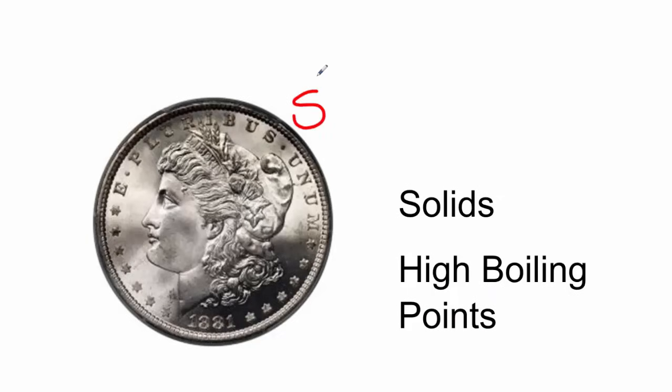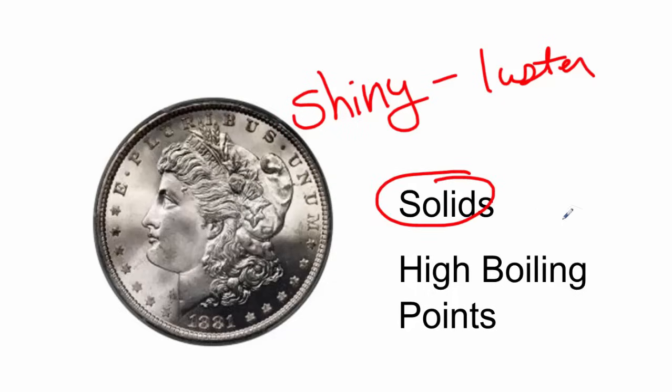Metals are also shiny. And we might say luster as another way to describe shiny. They are almost all solids, with the exception of mercury, at room temperature. They have high boiling points. That's because they are those solids.